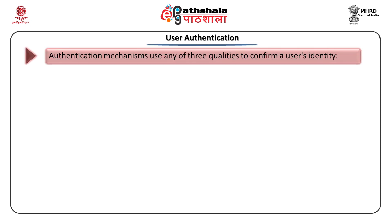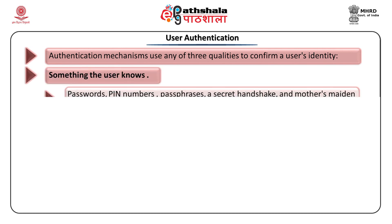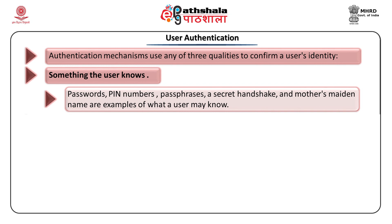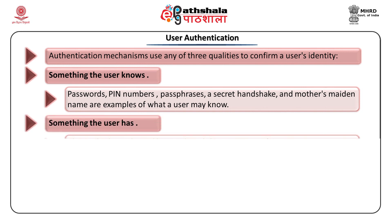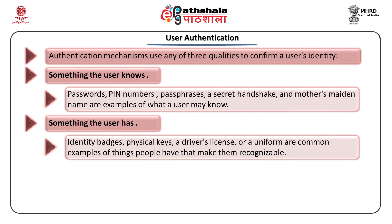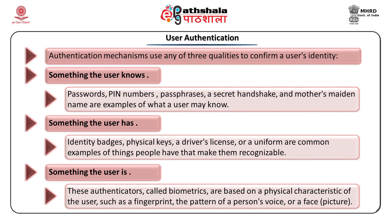User authentication mechanisms use any of three qualities: something the user knows (passwords, PIN numbers, passphrases, secret handshakes, mother's maiden name), something the user has (identity badges, physical keys, a driver's license, a uniform), and something the user is (biometrics — physical characteristics of the user such as fingerprint, voice, or face). The most common authentication mechanism is the password mechanism. Its use is simple, but sometimes a username or assigned user ID can be available to the public. The system then requests a password from the user, and if the password matches the one on file, the user is authenticated and allowed access.